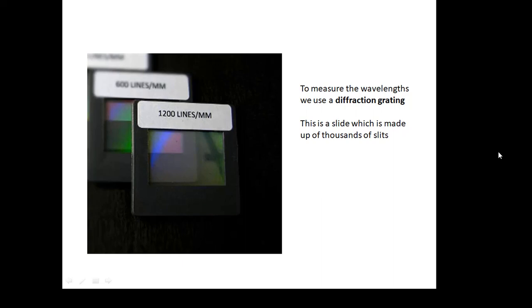Now, to measure the different wavelengths, we use something called a diffraction grating, which is a slide which has thousands and thousands of slits. This particular diffraction grating has 1,200 lines per millimetre. Yeah, the slits are very close together. Lots and lots of slits.